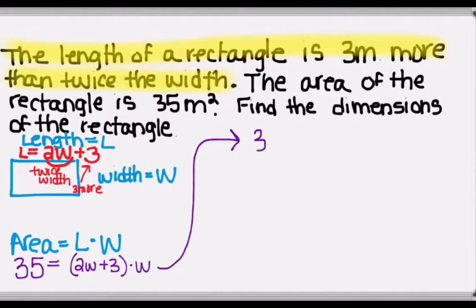And now we'll multiply through, so we get 35 is equal to 2W squared plus 3W.